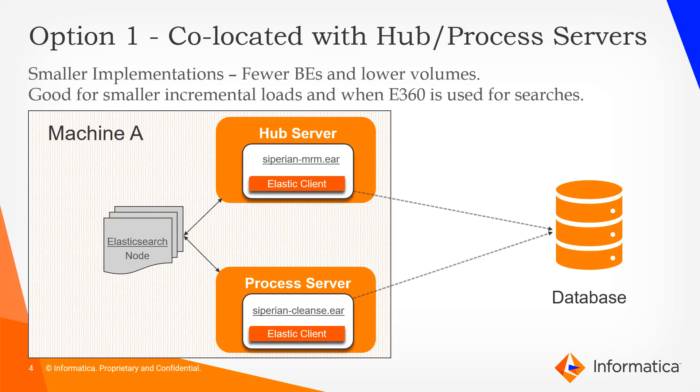What we have in front of us is a co-located hub and process server along with the Elasticsearch node. This architecture, which hosts the Elasticsearch node on the same machine as the hub and process server, is ideal for sandbox and development environments. This basic architecture is ideal for lower environments, typically sandbox and development — these environments which do not see a lot of load, API activity, or constant creates, updates, or searches. This approach is typically not recommended for a production environment.